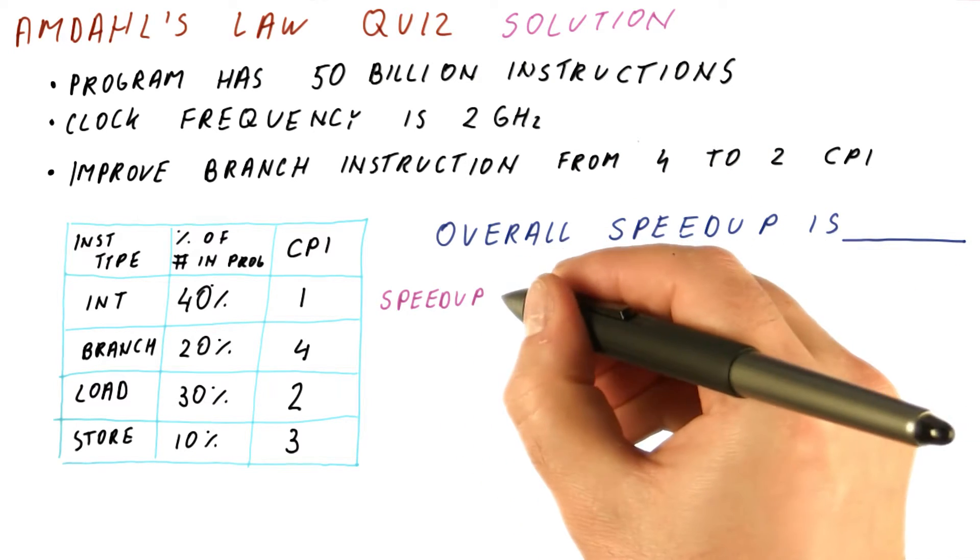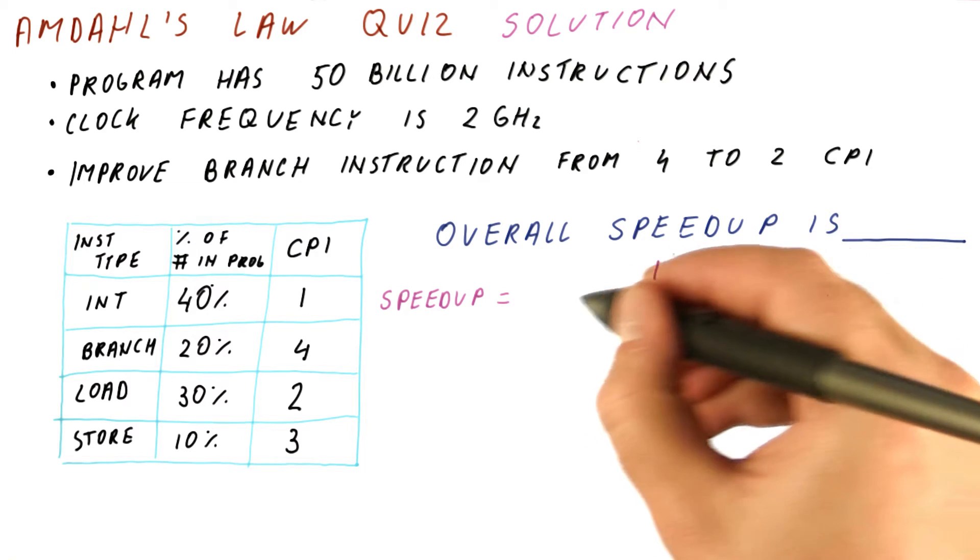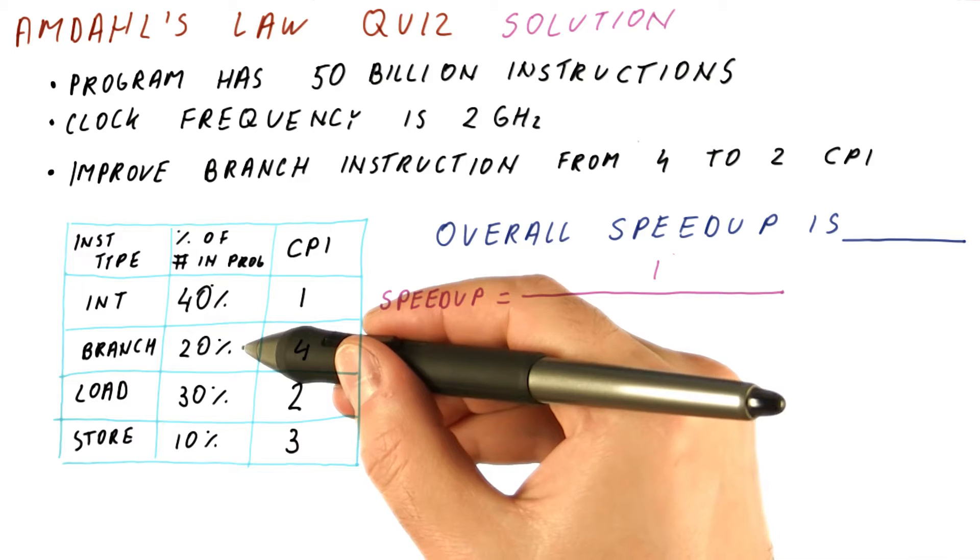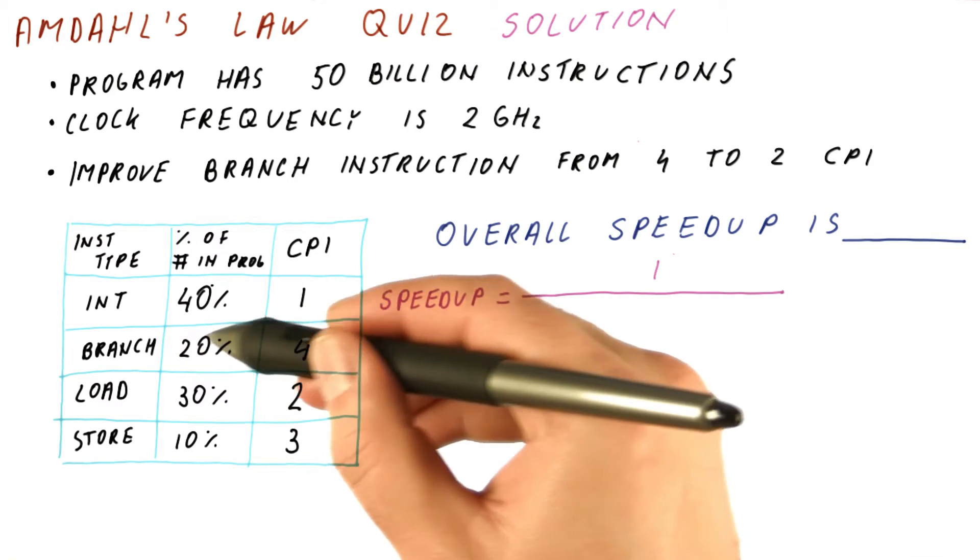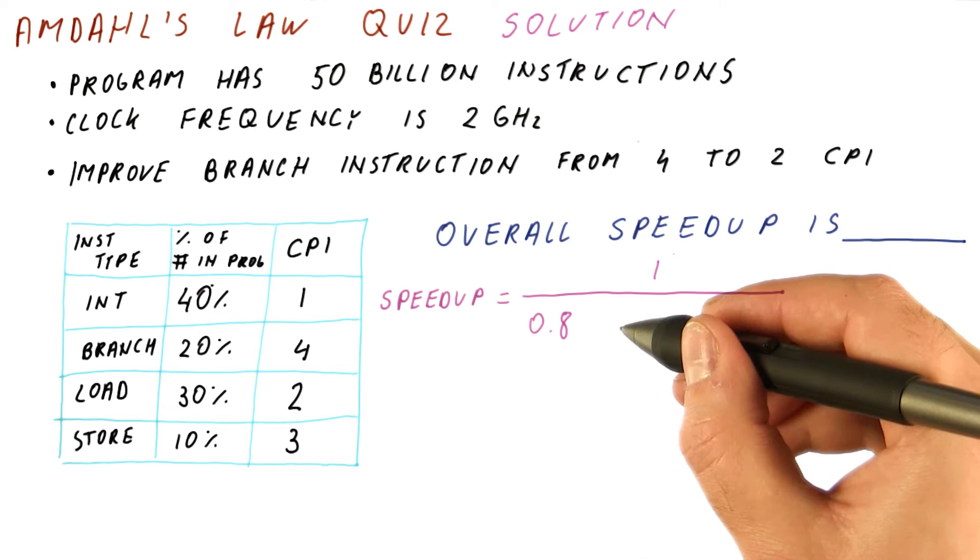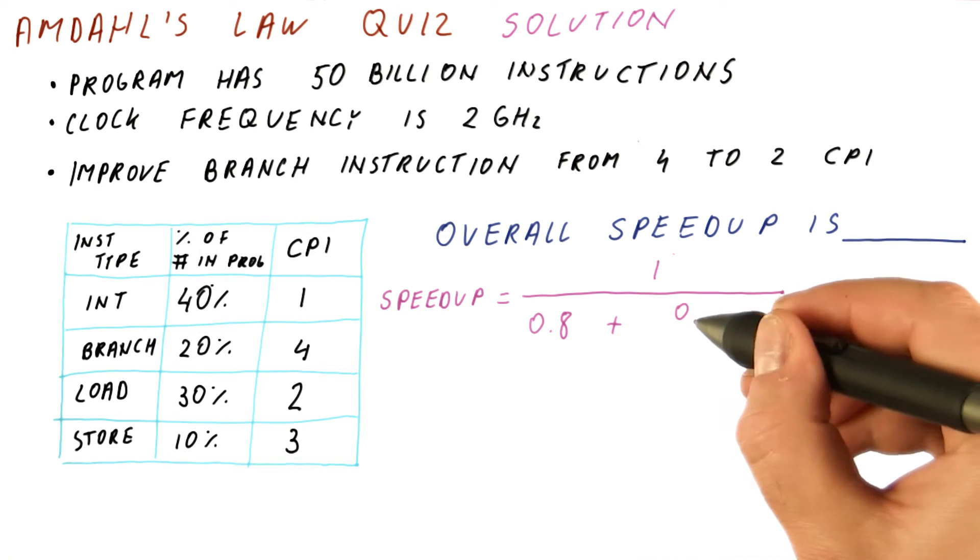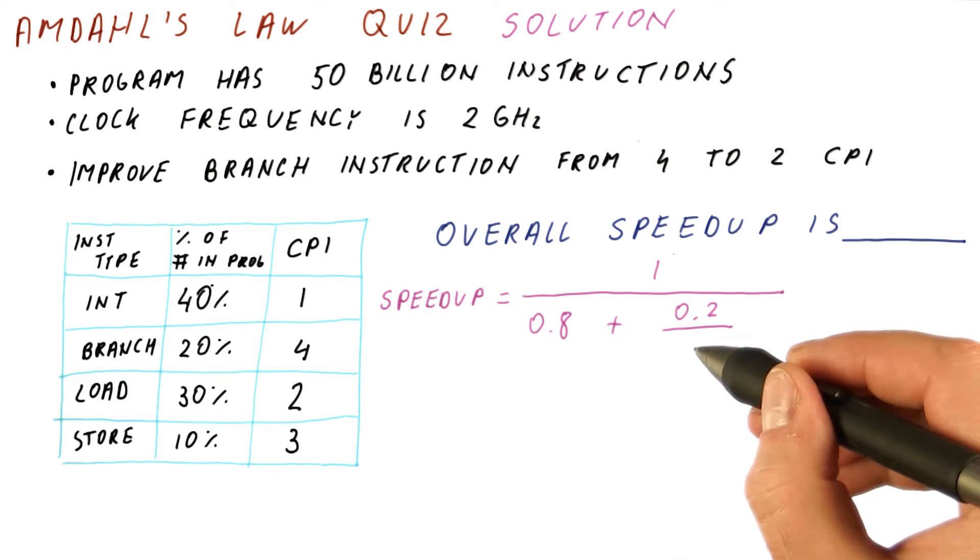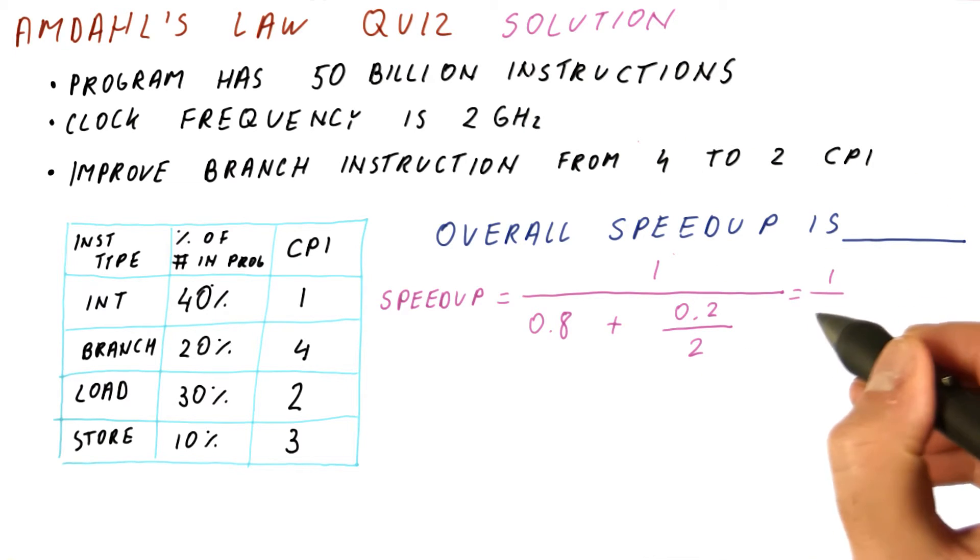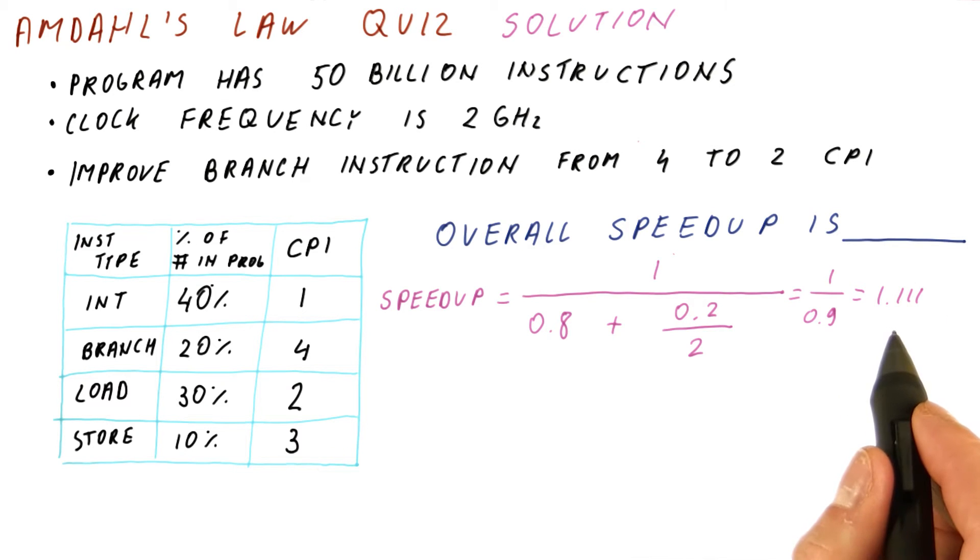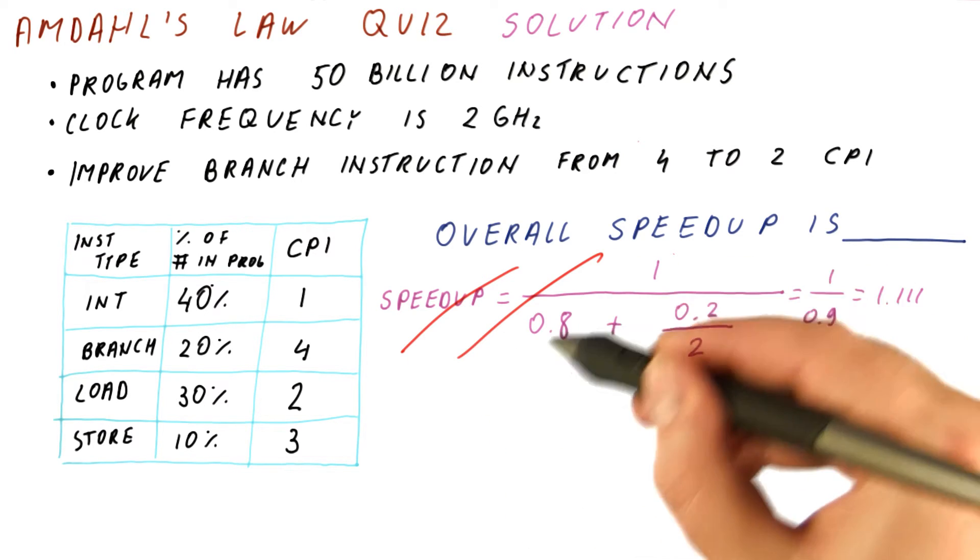If we try to use Amdahl's law, we might do something like this. This overall speedup is 1 over 1 minus fraction enhanced. The fraction enhanced is 20%, so it will be 0.8 is the 1 minus that, plus 0.2 is the fraction enhanced, divided by the speedup is 2. So this would be 1 over 0.9, which would be 1.111. And if you did this, you would be horribly, horribly wrong.